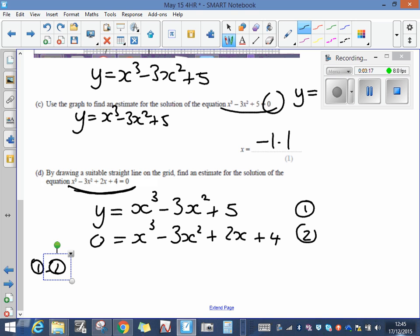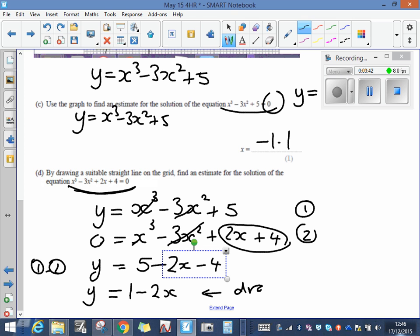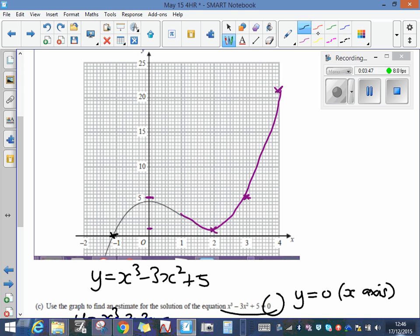First of all, y take away 0, well that's just y. x cubed take away x cubed, well that disappears. Minus 3x squared minus minus 3x squared, gone. I'm now going to do 5 and I'm going to subtract these two, so it's 5 take away 2x take away 4. That's the same as y equals, 5 take away 4 is 1, and 1 minus 2x. So that is the line that I need to draw. Back to the line, I am going to now draw the line y equals 1 minus 2x.